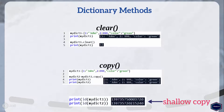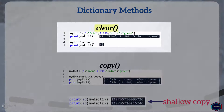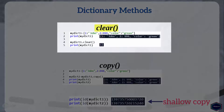Now let's start with the first method, clear. The clear method removes all items from the dictionary. In this example, I have dictionary object myDictionary1. Now when I call the clear method on myDictionary1, the clear method deletes all items from myDictionary1.